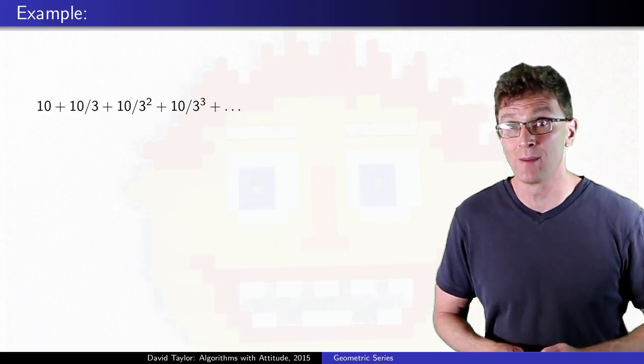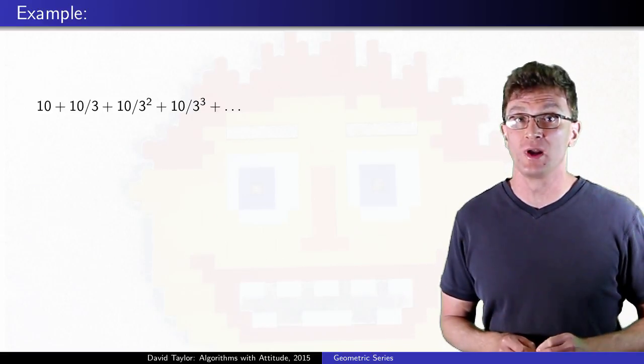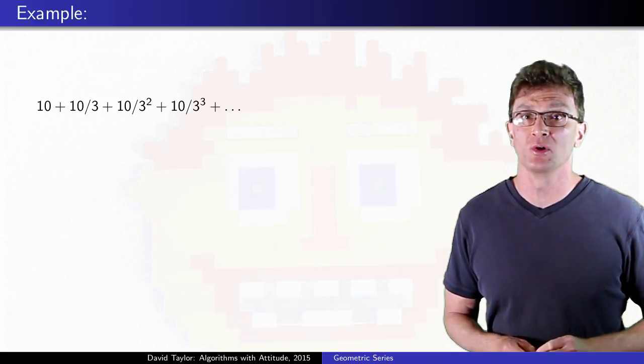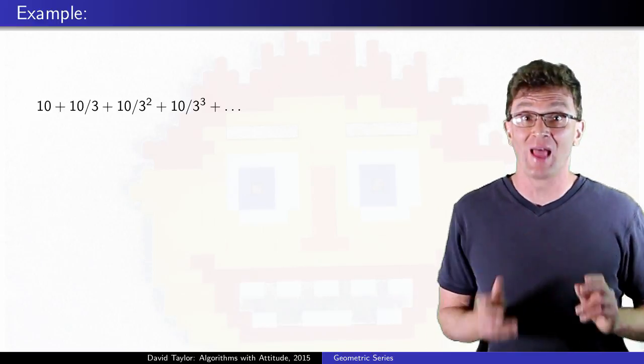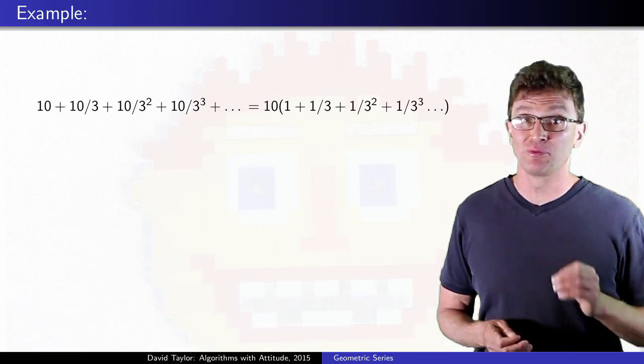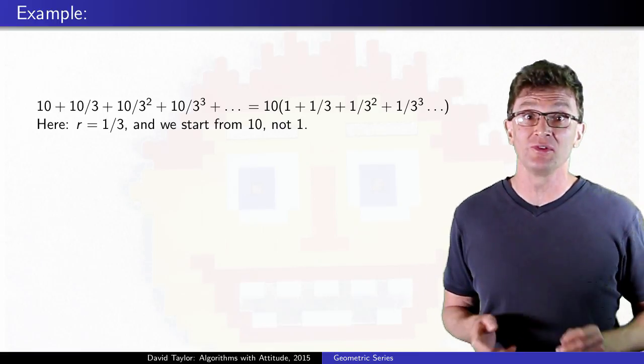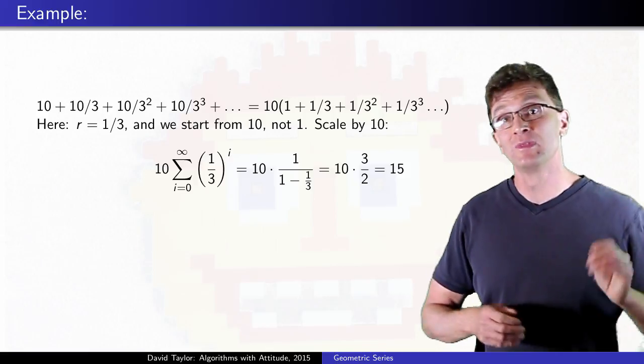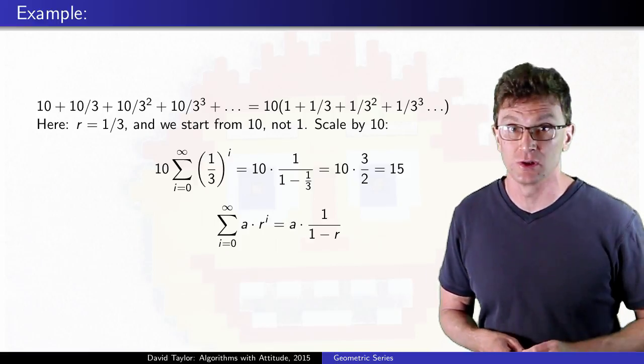To take another example, let's use a 1 third ratio, but this time don't start at 1. Well that's fine, everything is now scaled up by 10. You can either repeat the same steps as before, or just use the previous result scaled by 10. That gives the next level of generalization for the equation.